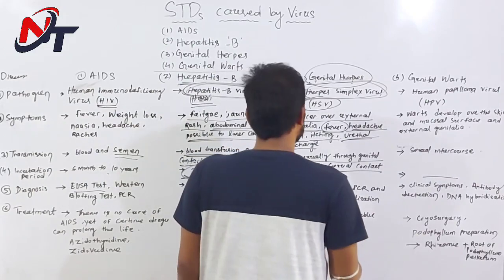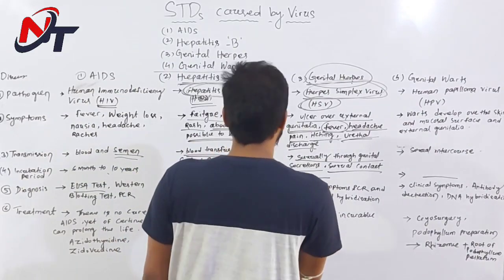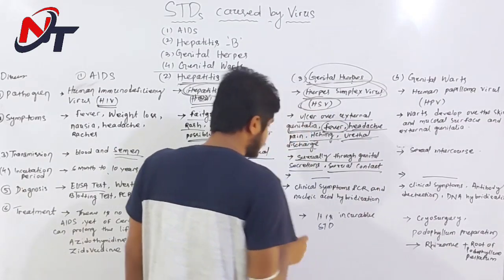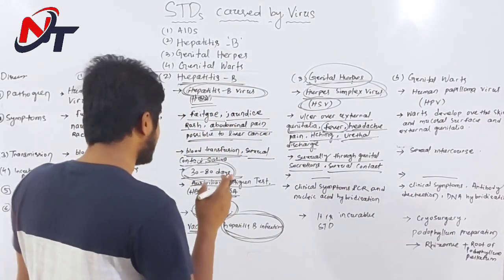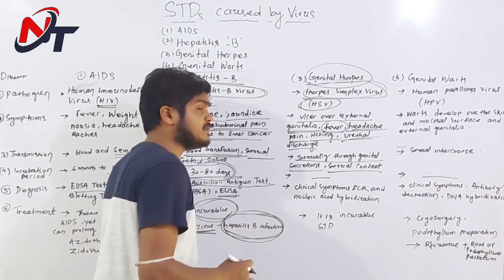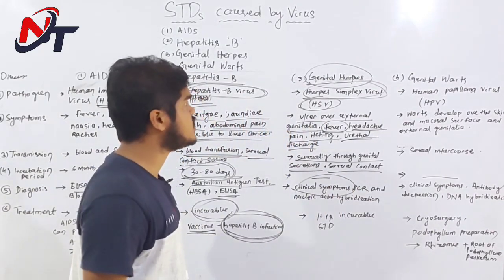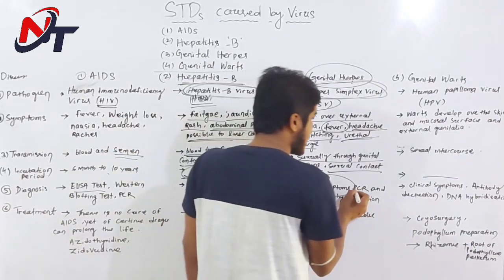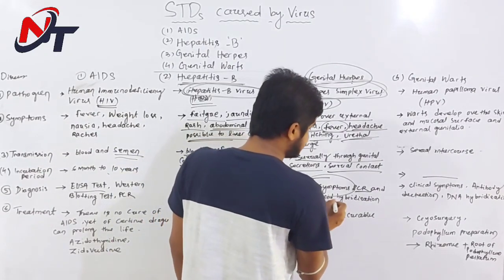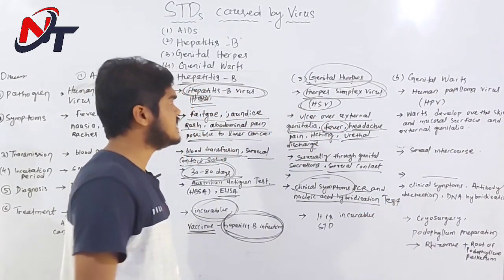The incubation period for genital herpes is different from AIDS (6 months to 10 years) and hepatitis B (30 to 80 days). For diagnosis, clinical symptoms are used as initial indicators. The PCR test and nucleic acid hybridization test are used to diagnose genital herpes.